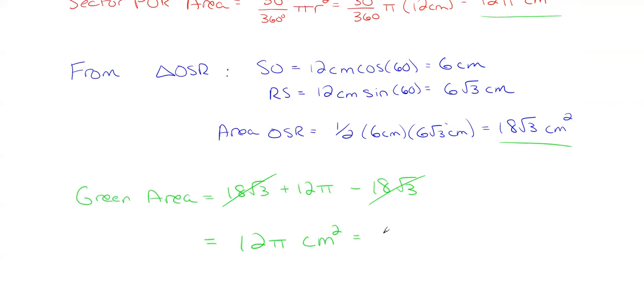So my area in green is 12 pi centimeters squared which if you want to approximate it is 37.7 centimeters squared. And that's how you would find the area in green for that particular problem.